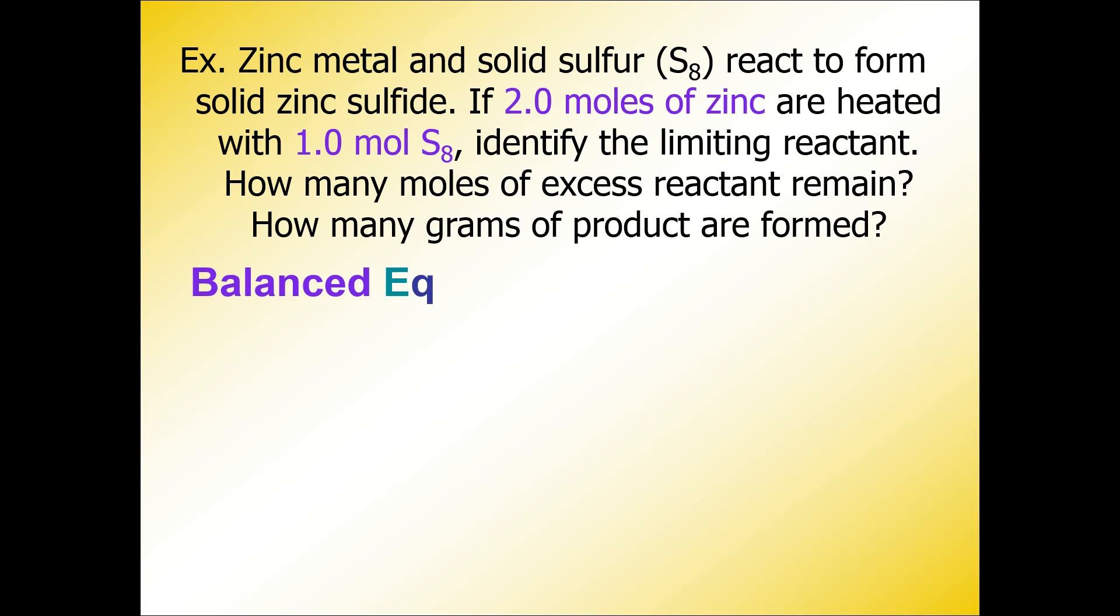Here is the balanced chemical equation: 8 Zn + S8 → 8 ZnS. Now when we do a limiting reactant problem, you are usually given two different reactant amounts to start with. Imagine that you are a scientist mixing some zinc and some sulfur to make zinc sulfide. If I were to give you two moles of zinc and one mole of sulfur, you need to figure out which one's going to run out first.